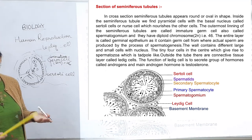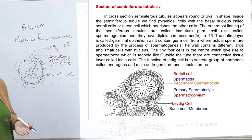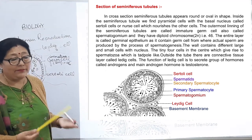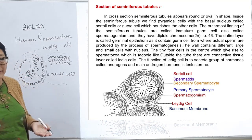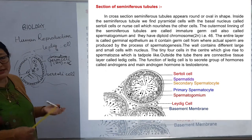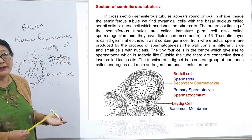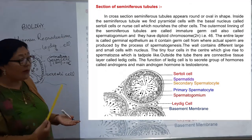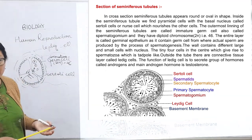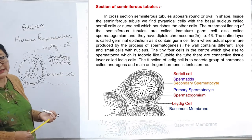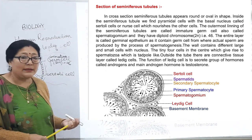The endocrine function involves secretion of hormones directly into the bloodstream or tissue fluid. The exocrine function involves secretion of sperm through ducts. Testosterone is secreted by Leydig cells, making the testes a mixed gland.